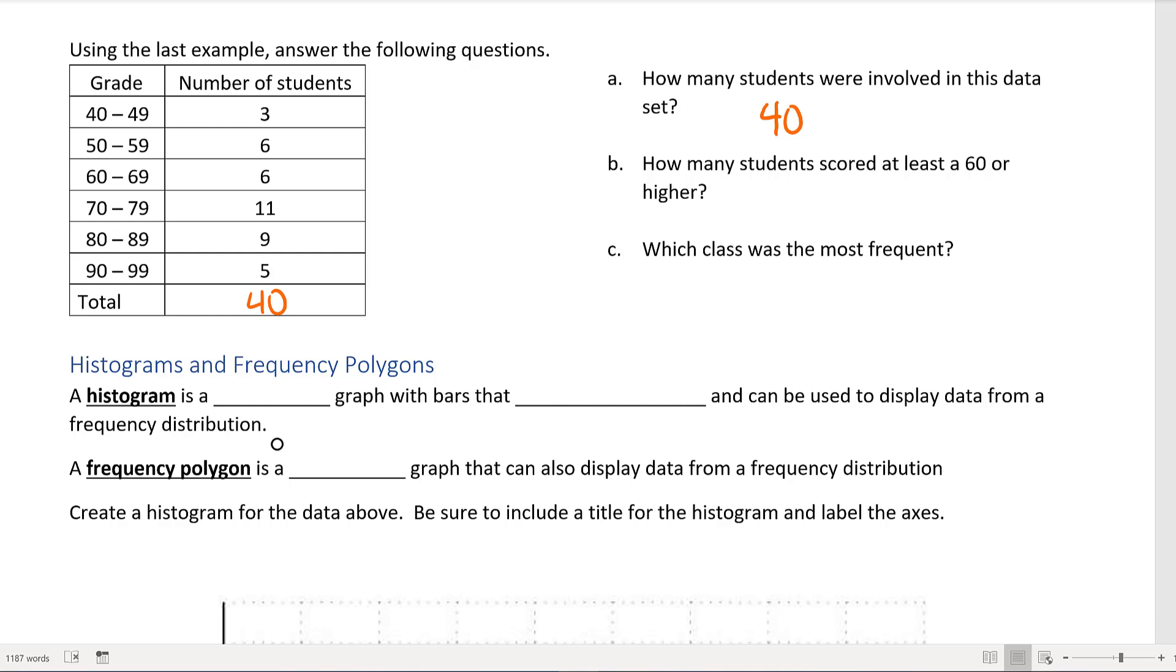How many students scored at least a 60 or higher? Well, if I'm talking about 60 or higher, that's the group from 60 to 69, 70 to 79, 80 to 89, and 90 to 99. And if I add all of these up, I'm getting 31 students scored at least a 60 or higher.